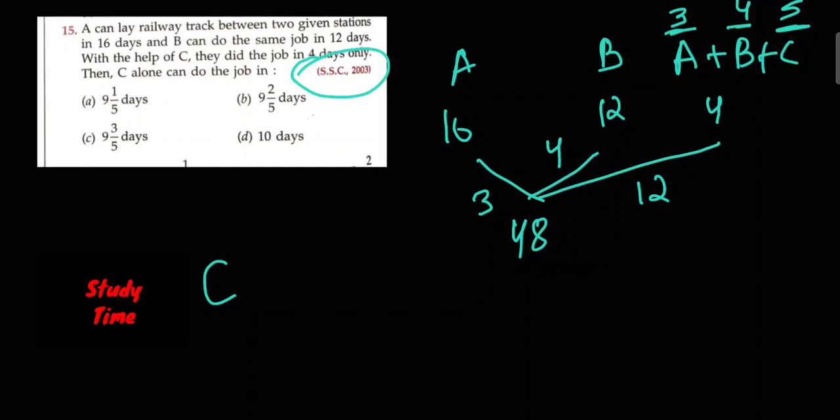C's efficiency is 5, total work is 48. So the time is 48 divided by 5, which equals 9 and 3/5 days. Option C is the answer.